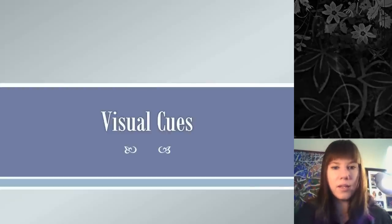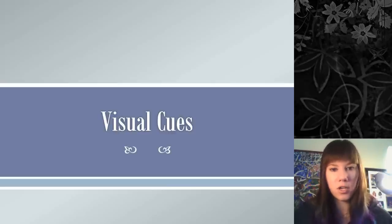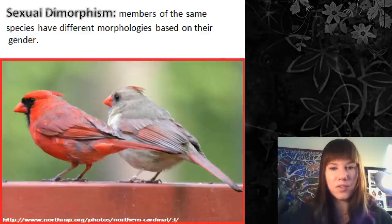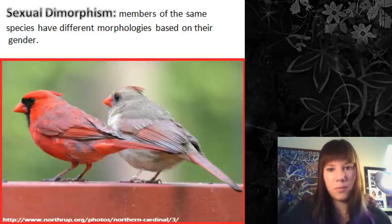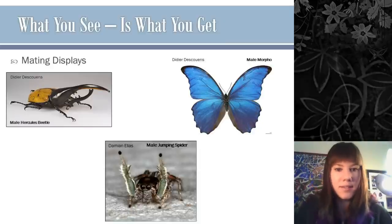One way insects communicate is via visual communication — color patterns, iridescence, different morphologies, or behaviors. One of the most obvious is sexual dimorphism: a polyphenism where two different morphologies in a species are based on whether you're male or female. Birds show this too — male cardinals are bright red while females are grayish — and sexual dimorphism is seen in insects a lot as well.